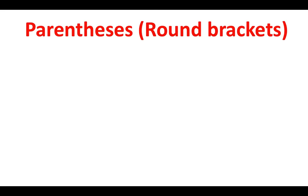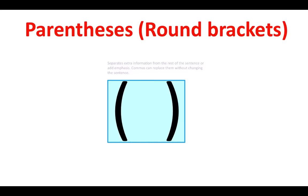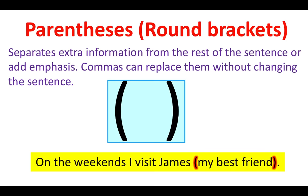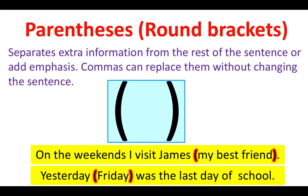Parentheses, or more commonly known as round brackets. Round brackets are used to separate extra information from the rest of the sentence or to add emphasis. It's important to note that commas can replace brackets without changing the actual sentence. For example: On the weekends I visit James (my best friend). Yesterday (Friday) was the last day of school. These are both examples where round brackets are used to separate extra information within the sentence.